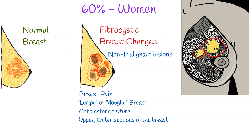The lumps in fibrocystic breasts tend to fluctuate in size throughout the month and are usually movable. Breasts and nipples may also be tender or itchy.